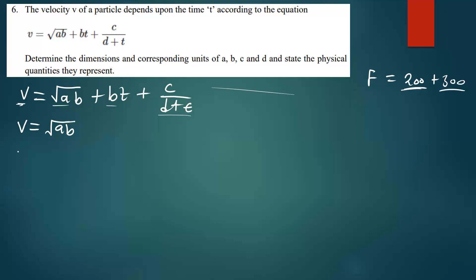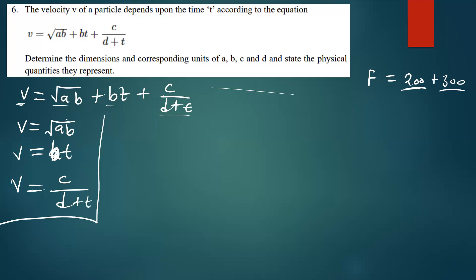Since velocity is on the left side, each term on the right must also be velocity. So we equate: V equals the square root of A times B, V equals B times T, and V equals C over D plus T. We start with the term that has only one unknown, which is B, since the other terms each have two unknowns.